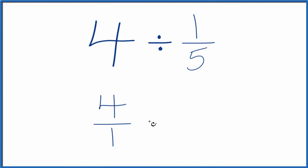Instead of division, we're going to multiply by the reciprocal of 1 fifth. To take the reciprocal of a fraction, you move the numerator down and the denominator up. So we have 5 over 1. 5 over 1, that's the reciprocal of 1 fifth.